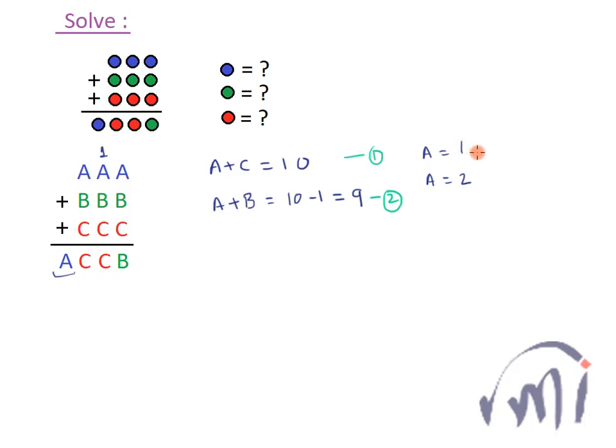So first let's assume the value of A is 1. If I substitute the value of A is equal to 1 in equation number 1, 1 plus C is equal to 10 or C will be equal to 10 minus 1 which is equal to 9.